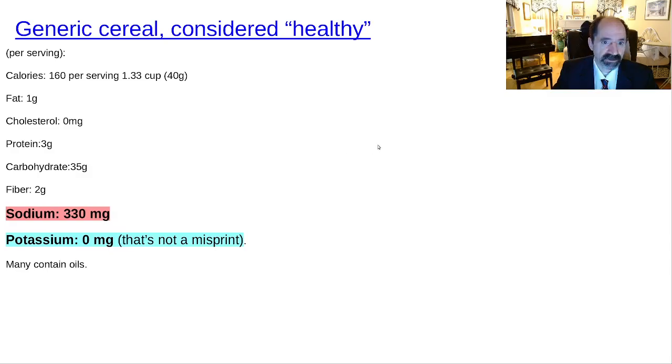And then here, just to get an idea of a processed food, here's some generic cereal. And the ratio is now flipped around. It's about 0 milligrams per potassium. That's not a misprint. 0 milligrams of potassium per serving in this typical cereal, 330 milligrams per serving of sodium. So that's how terrible processed foods are.